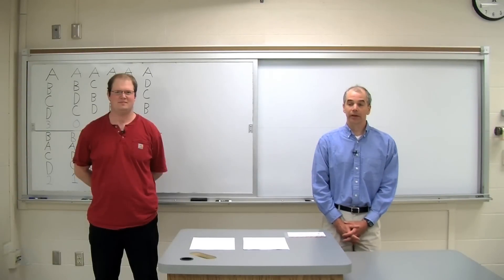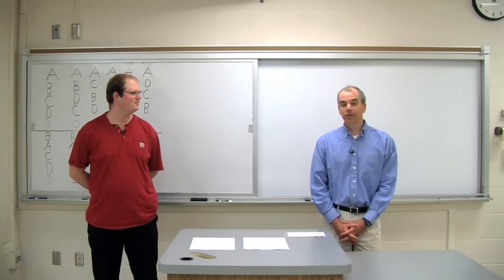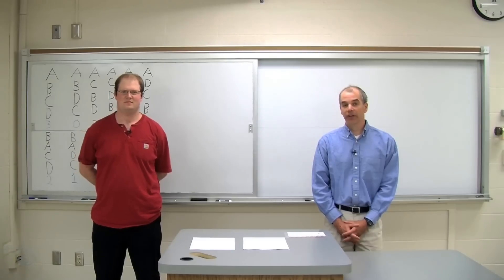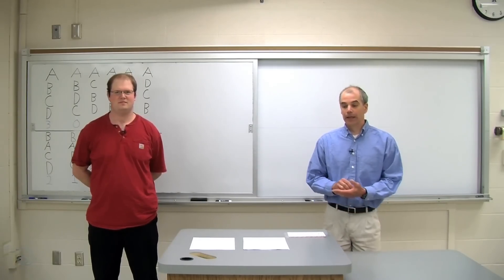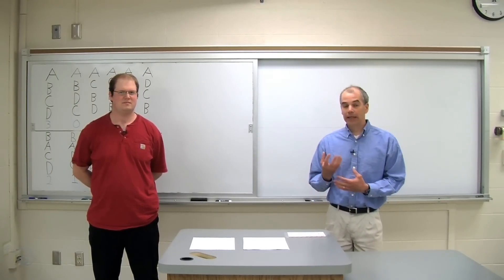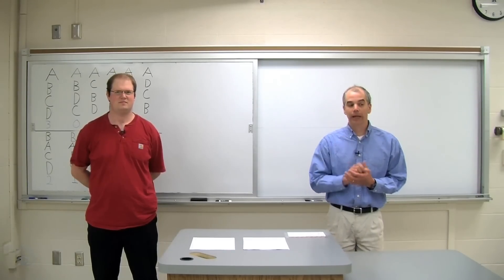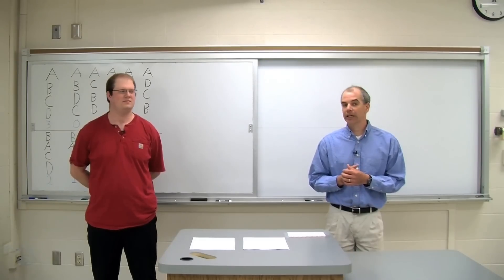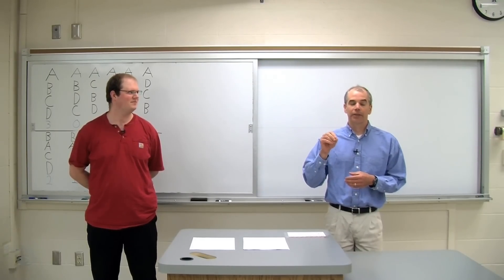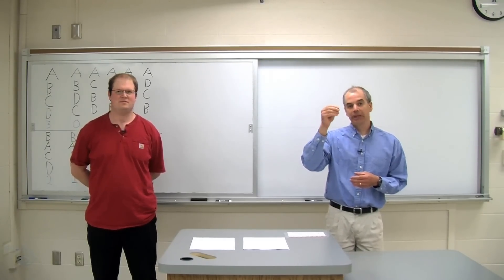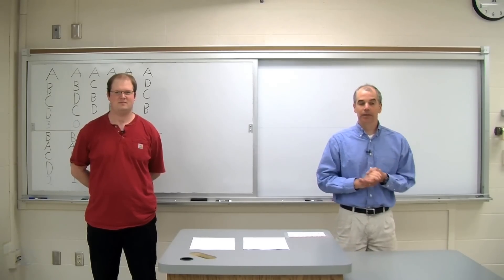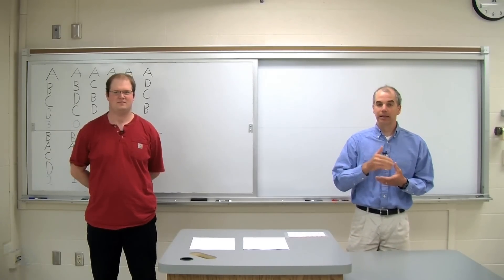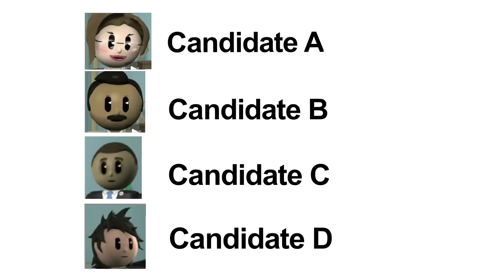Now that you've met the candidates, what we're going to do is ask you to rank them. Each person in the class should rank them. For example, maybe you liked candidate B the best, so you would rank B as the first choice. Then maybe your next choice was candidate D, so you would have the order B, D, A, C. Or maybe someone else liked the order A, C, B, D. Rank them from most favorite to least favorite. The teacher can pause the video now.